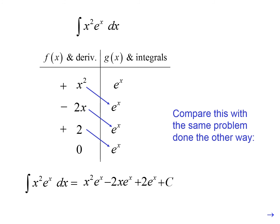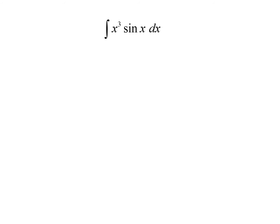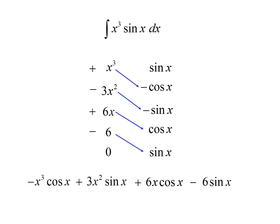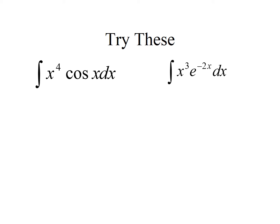Let's try another example. X cubed will differentiate to zero, and sine X integrates easily. We start with X cubed and differentiate until we reach zero. We take sine X and integrate it — remember, we're integrating, not differentiating. We alternate signs on the left, then multiply diagonally to get our answer. This is a nice shortcut that only works when one term differentiates to zero and the other integrates easily.